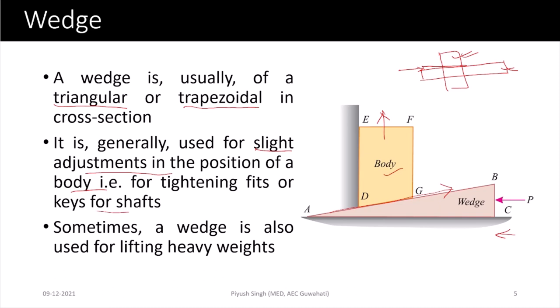Sometimes wedges are also used for lifting heavy loads. A similar application is shown in this figure where we have a large weight that has to be lifted upwards. We place a wedge ABC below the object and apply a horizontal load P. When this load P is applied, the wedge moves below the object, the body climbs over the inclined plane AB, and as a result it rises upwards.